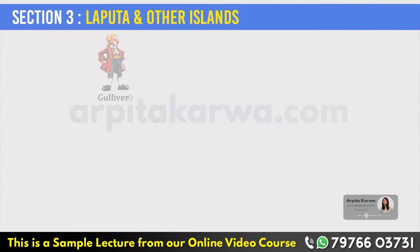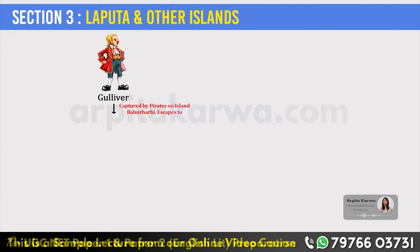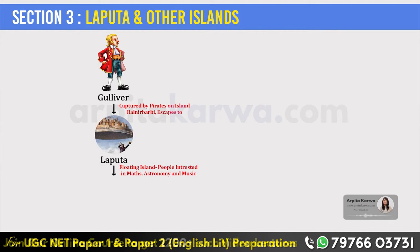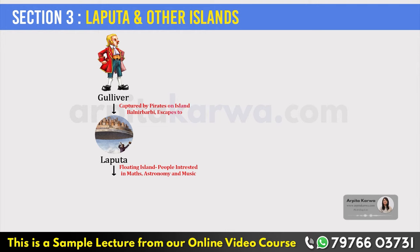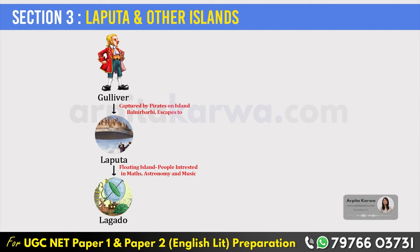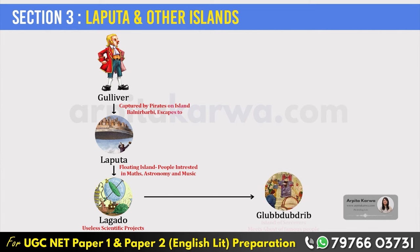After another two months, Gulliver travels again and is captured by a group of pirates. On a small island called Balnibarbi, as he's sitting, he sees a floating island overhead whose name is Laputa. He asks for help and is brought up by rope. The inhabitants of Laputa were people who had deep interest in mathematics, astronomy, and music — in a sense, more into theory rather than practicality.